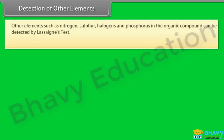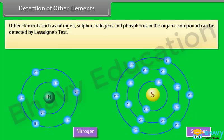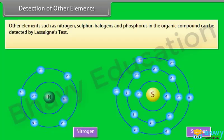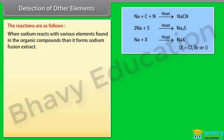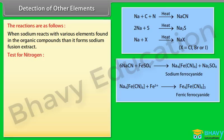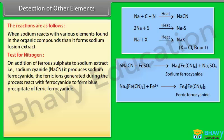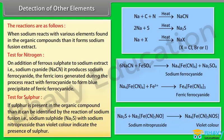Detection of other elements: Nitrogen, sulfur, halogens, and phosphorus in organic compounds can be detected by Lassaigne's test. The elements in the organic compound fuse with sodium metal to form the sodium fusion extract. For nitrogen: addition of ferrous sulphate to the sodium extract (sodium cyanide) produces sodium ferrocyanide; ferric ions then react with ferrocyanide to form a blue precipitate of ferric ferrocyanide (Prussian blue). For sulfur: the reaction of sodium fusion (sodium sulphide, Na₂S) with sodium nitroprusside gives a violet color, indicating the presence of sulfur.